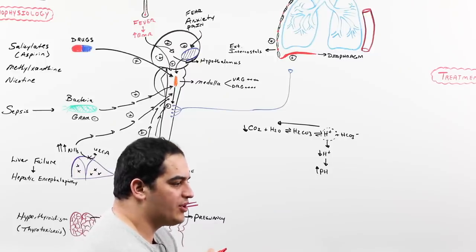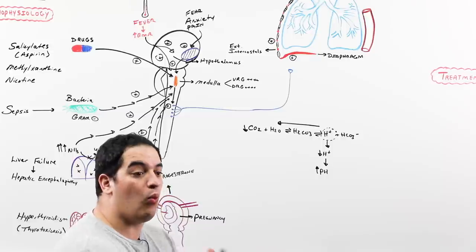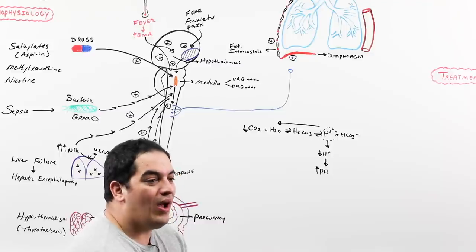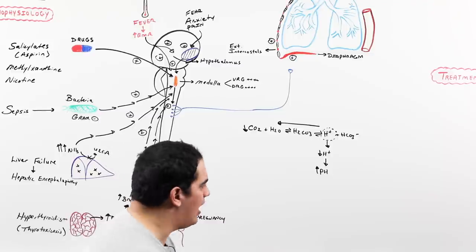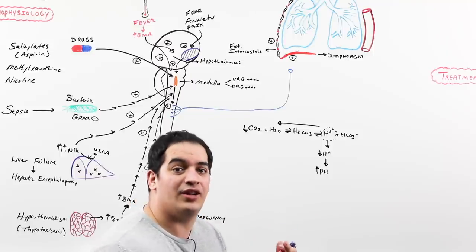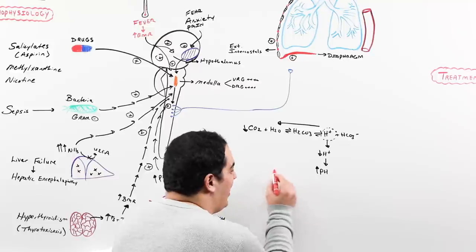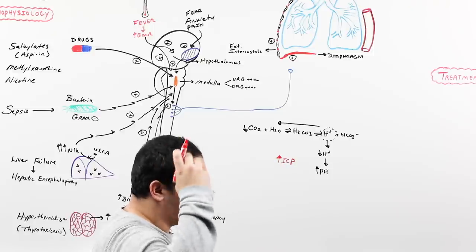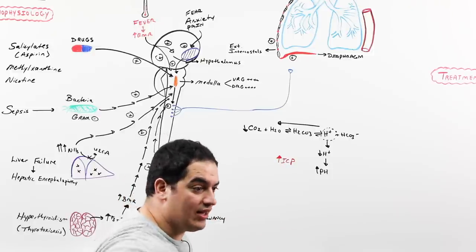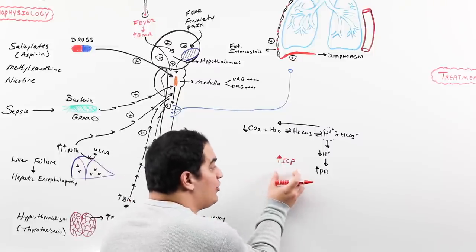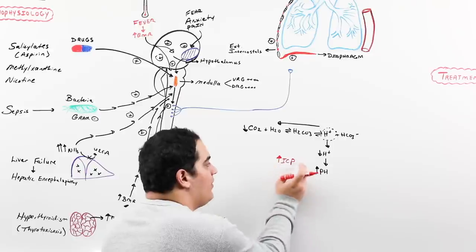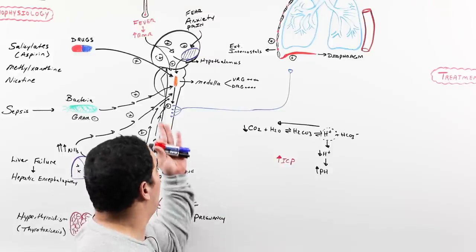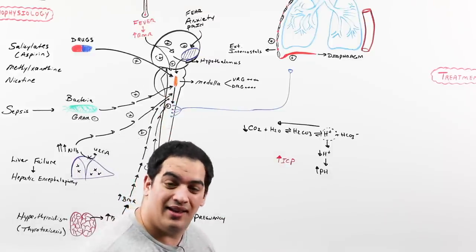Sometimes people with midbrain tumors can also lead to this type of hyperventilation response. There's one more scenario: sometimes we actually want to cause an alkalotic reaction in people who have elevated intracranial pressure (ICP). When someone has high ICP — whether from a tumor, a bleed, or cytotoxic edema from an infarction — it can cause the brain to herniate, compress the brainstem, cause you to lose respiratory and cardiovascular function, and the patient can die.